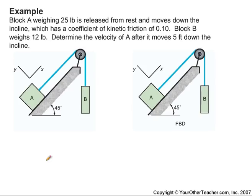Here's an energy problem involving a system of particles. Block A weighing 25 pounds is released from rest and moves down the incline, which has a coefficient of kinetic friction of 0.1. Block B weighs 12 pounds. Determine the velocity of A after it moves 5 feet down the incline.